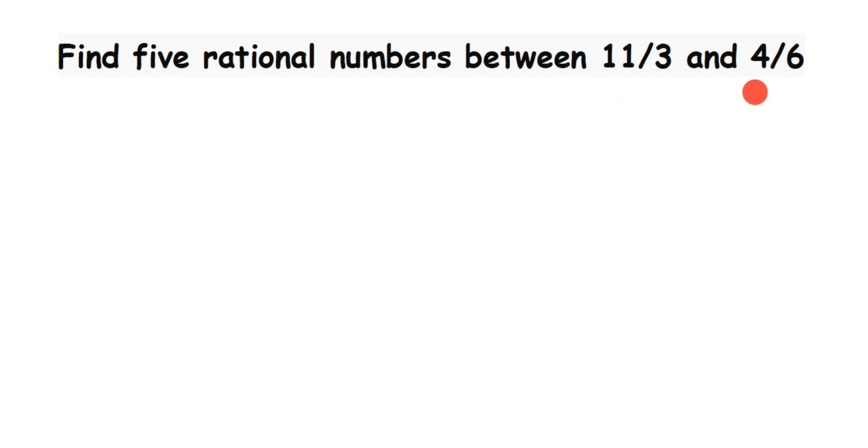Whenever they will give you to find rational numbers between two rational numbers, first step is check their denominators. If denominators are same then you can go to second step. Here in this question you can see we have 11 by 3 and 4 by 6. The denominators are not same, so we have to make it same by taking LCM of both the denominators.